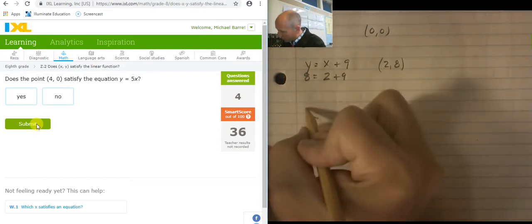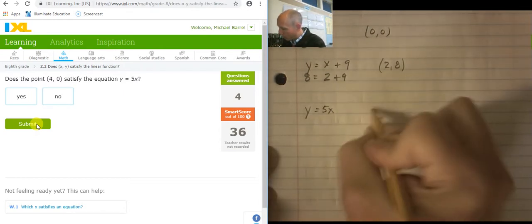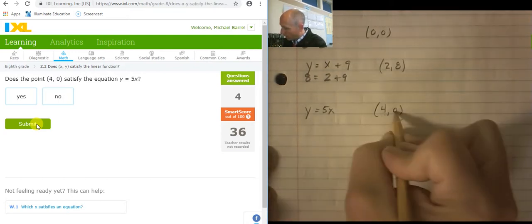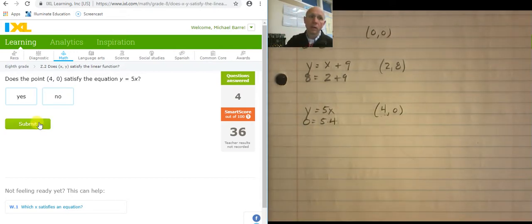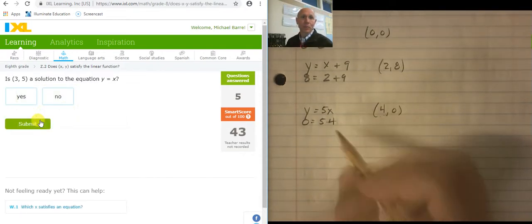Y equals 5x. And I'm about to plug in 4 comma 0. X is 4 and y is 0. So 0 equals 5 times 4. 5 times 4 is 0. No. Y equals x. Does 3 equal 5? No.